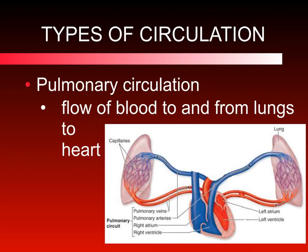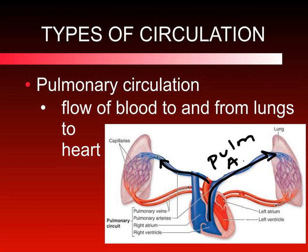There are three types of circulation. The pulmonary circulation is the flow of blood from the heart to the lungs and back to the heart. The right ventricle sends blood to the lungs via the pulmonary artery — there's a left side one and a right side one. The blood then returns from the lungs back to the left atrium using the pulmonary veins. That is your pulmonary circulation.